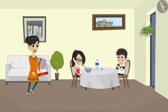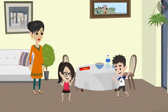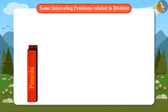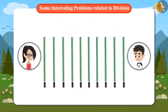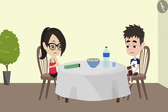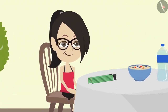Mummy has brought a packet of pencils for Vandana and her brother. In this packet, there are 10 pencils. Vandana has to keep half of these pencils with her and give half of them to her brother. But Vandana does not understand how she should distribute these pencils equally between two people. Can you help Vandana?